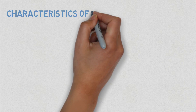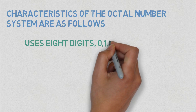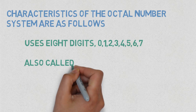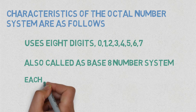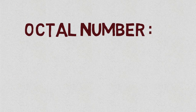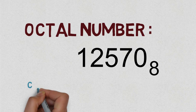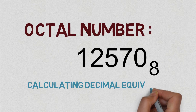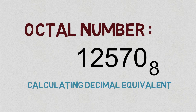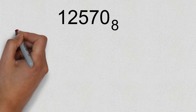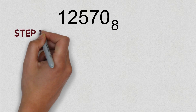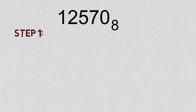Now we look at the octal number system. The characteristics of the octal number system are: it uses 8 digits — 0, 1, 2, 3, 4, 5, 6, 7 — and is also called the base-8 number system. Each position in an octal number represents a power of the base 8, for example 8⁰. Here is an example to understand the octal number system better, and we will also convert the octal number into a decimal equivalent, just like we did with binary. The example octal number is 12570 base 8.